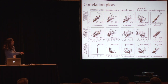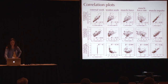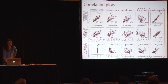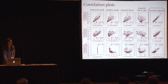Muscle impulse gives the best correlation — an R² of 0.92 for metabolic cost per hop, not bad for metabolic cost per time, and pretty good for metabolic cost per height as well.